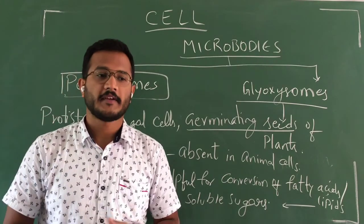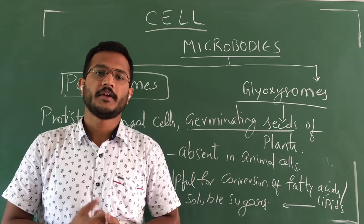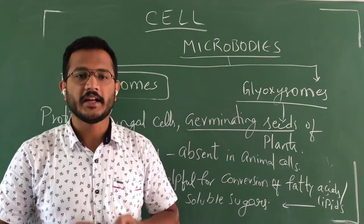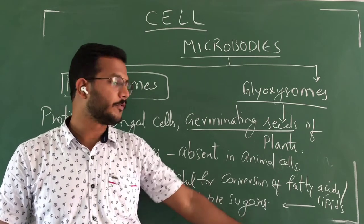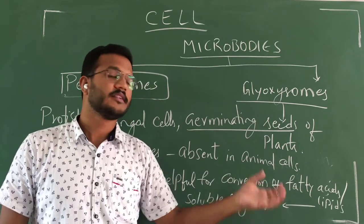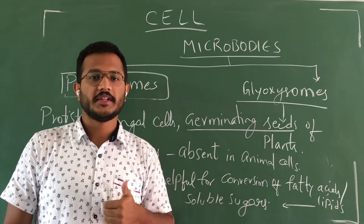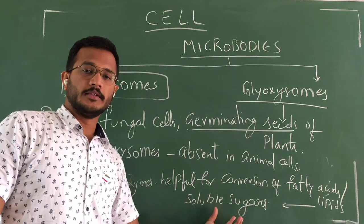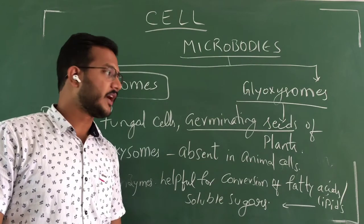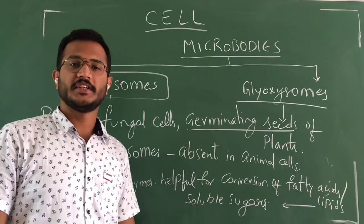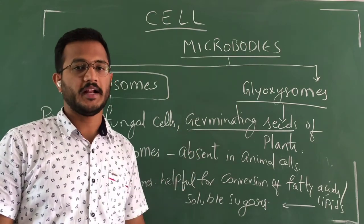For example, when we plant a seed, initially it cannot have leaves, so it cannot prepare its own food. It utilizes the food resources stored in the endosperm of the seed. Food is initially stored in the form of lipids. The glyoxysome releases enzymes that break down the lipids and convert them into simple soluble sugars, which can then be taken up by the germinating seed. This is why glyoxysomes are essential in germinating seeds.